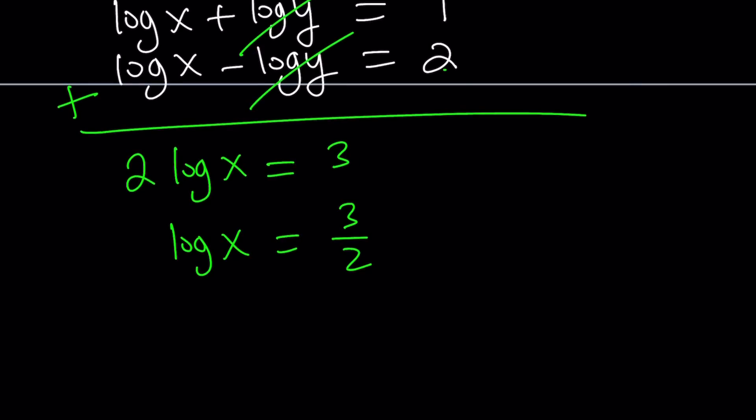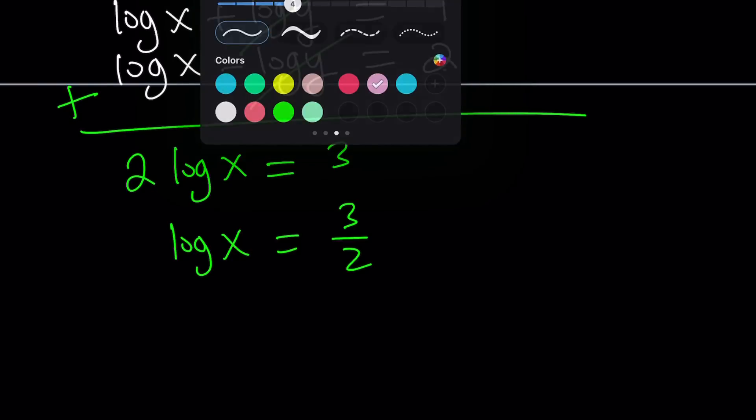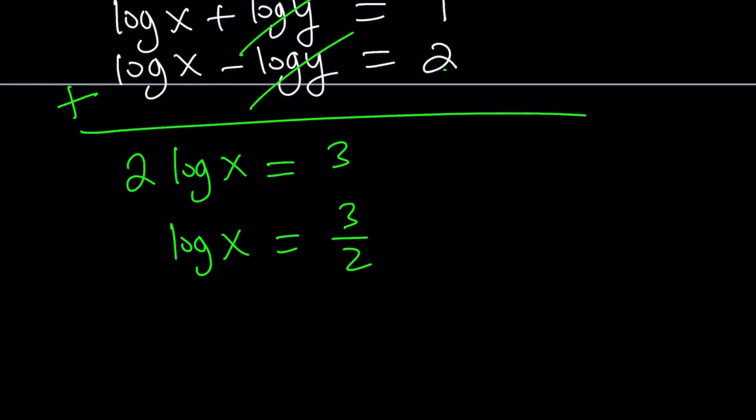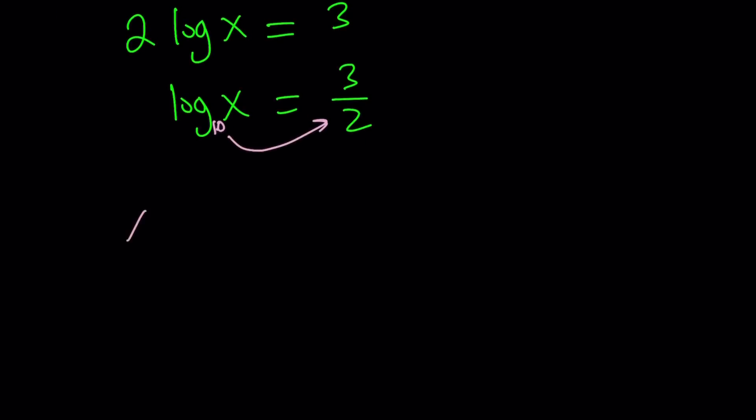This is definitely a totally different approach because we're not really getting anything that we've got before. So anyways, this is a 10. So by using the definition, and you can always write it if you want. 10 to the power 3 halves is going to be x. So let's write it as an exponential. x equals 10 to the power 3 halves. Nice.